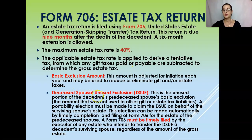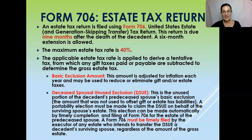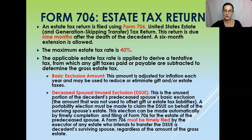The deceased spousal unused exclusion, also called the DSUE, is the unused portion of the decedent's pre-deceased spouse's basic exclusion amount. The DSUE is not the same thing as the unlimited marital transfer or the marital deduction — it is a separate thing entirely. It is an election that the surviving spouse can make.